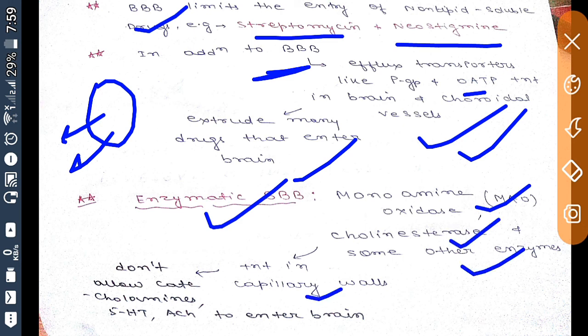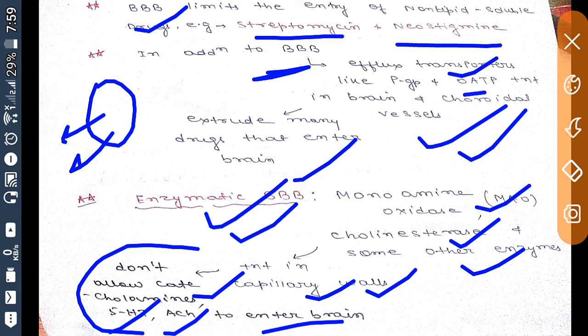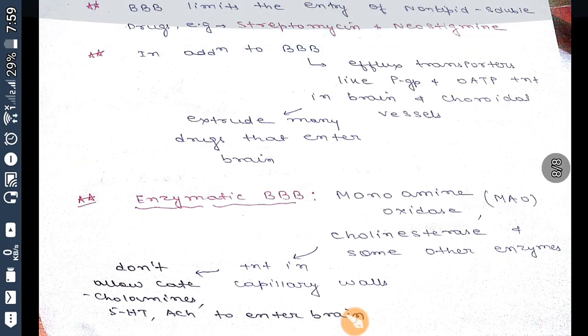cholinesterase, and some other enzymes which are present in capillary walls which don't allow catecholamines, 5-HT, acetylcholine to enter the brain. So there are three mechanisms limiting the entry of any drug to brain. First one is blood-brain barrier itself, the second one is efflux transporter, and the third one is enzymatic blood-brain barrier.